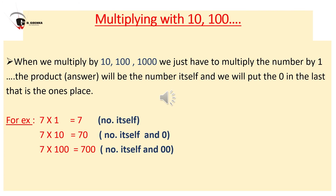Multiplying with 10, 100, 1000 and so on. When we multiply by 10, 100, or 1000, we just multiply the number by 1 and then add zeros at the end. For example, 7 multiplied by 1 equals 7; 7 multiplied by 10 equals 70; and 7 multiplied by 100 equals 700. Whenever we multiply by 10, 100, or other such numbers, the product is the number itself followed by the corresponding number of zeros.